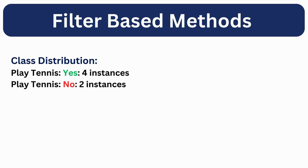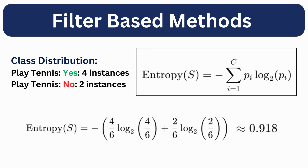Using this information, we will calculate the entropy of the entire dataset. Here is the formula to calculate the entropy. When we put the values into the formula, we get: negative (4/6) log₂(4/6) minus (2/6) log₂(2/6), where 4 is the count of the first class and 2 is the count of the second class, out of 6 total instances. So we get an entropy of 0.918 for the entire dataset.